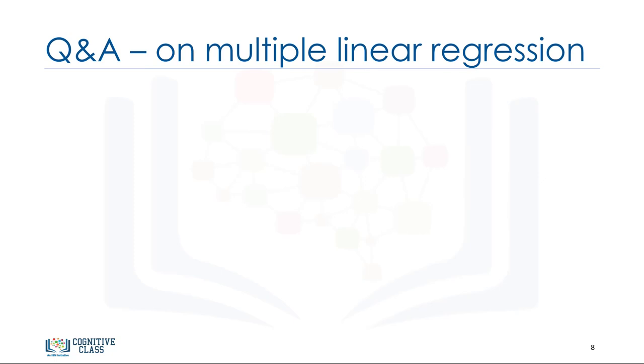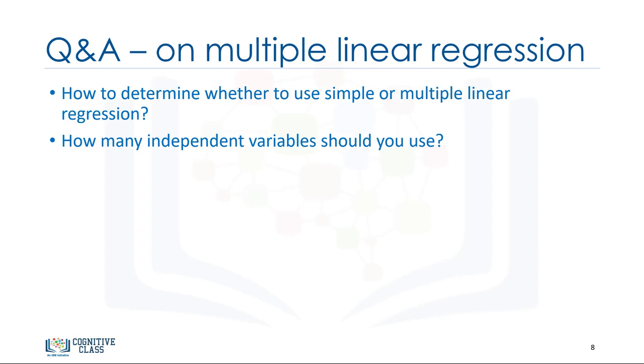Now, let me address some concerns that you might already be having regarding multiple linear regression. As you saw, you can use multiple independent variables to predict a target value in multiple linear regression. It sometimes results in a better model compared to using a simple linear regression, which uses only one independent variable to predict the dependent variable. Now, the question is, how many independent variables should we use for the prediction? Should we use all the fields in our data set? Does adding independent variables to a multiple linear regression model always increase the accuracy of the model?